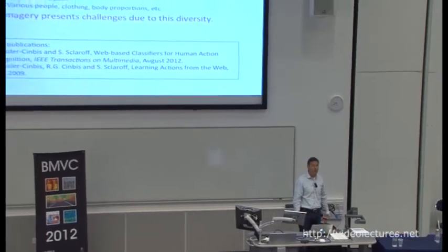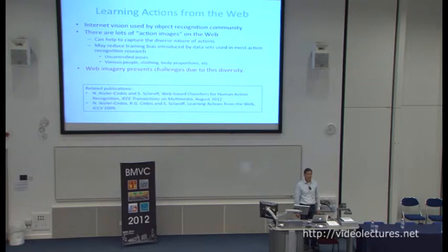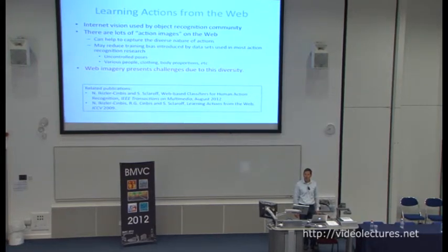In this work we're looking at learning actions from the web. Internet vision has been quite successfully used in the object recognition community, so we're taking inspiration from that. There are lots of action images on the web, and we're going to use images of human poses to recognize actions not only in images but also in video. These images help capture the diversity of actions we're trying to recognize and may reduce training bias encountered in staged datasets — there are uncontrolled poses, various people, clothing, and body proportions. Two papers are cited: one from ICCV and another from ACM Multimedia.